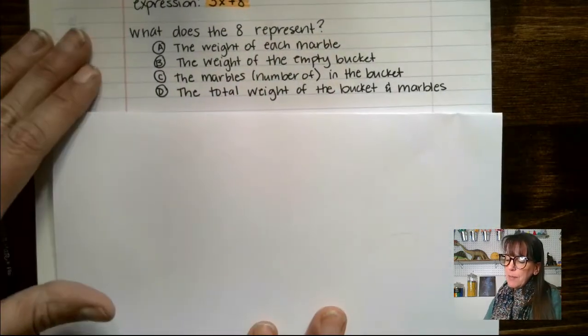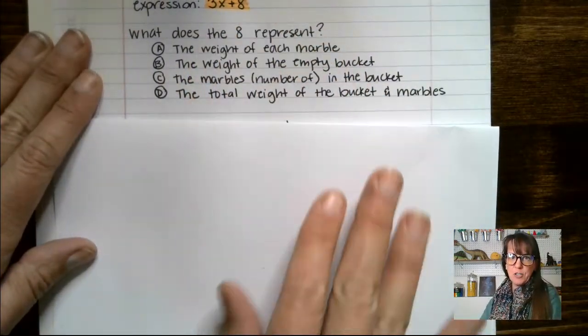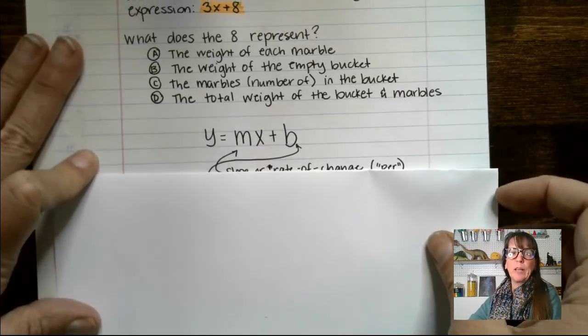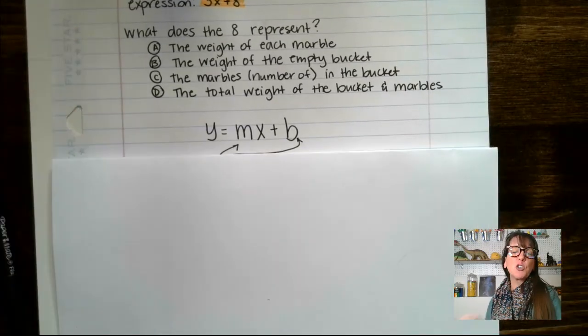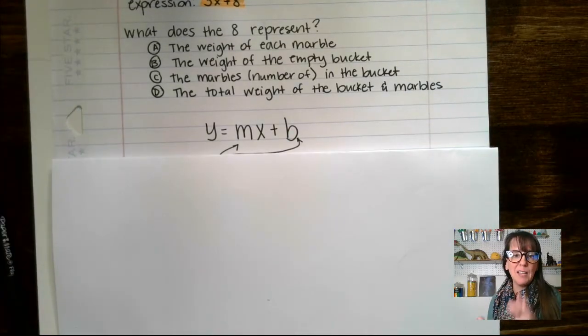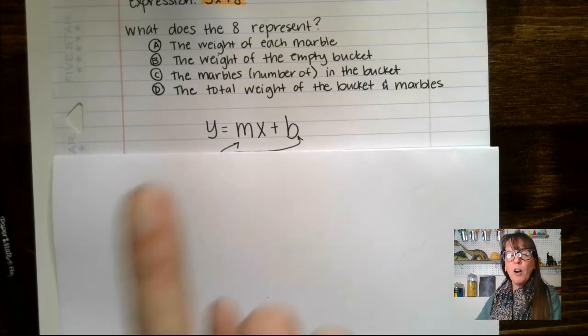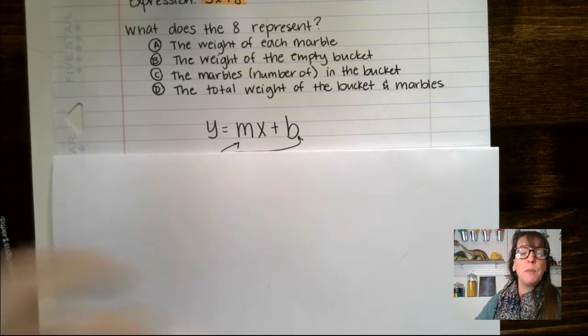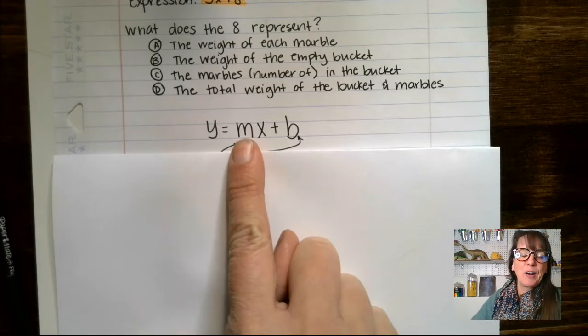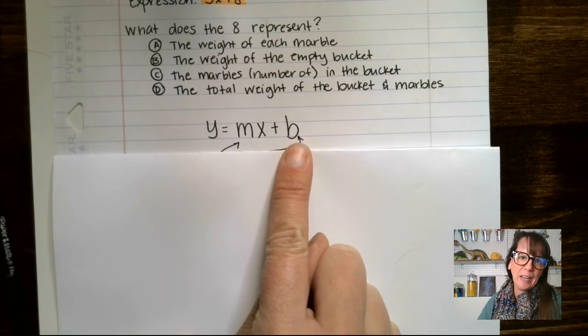We're going to come back to that question in just a second, but you may be familiar with y equals mx plus b. This is our slope-intercept form of a line. You may remember that m is our slope and b is our y-intercept.